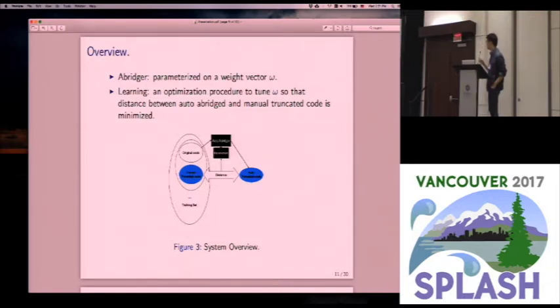So we put the original code to this black box. The black box is going to generate an automatically truncated code. Then we use a kind of distance measurement to compare the automatically truncated code and the human truncated code. This difference can be viewed as a loss function. Then we use this loss function to tune our parameters. So we call this procedure an optimization within optimization procedure.